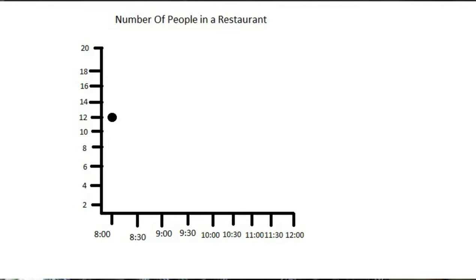Next, let us plot the graph by putting a dot corresponding to each value. First, 8 a.m. and 12. Next, 8:30 and 6. Then 9 and 2. Then 9:30 and 2. Then 10 and 8. Then 10:30 and 4. Then 11 and 12. Then 11:30 and 16. And lastly, 12 and 20.